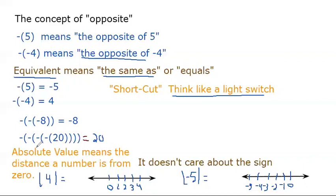Another important vocabulary term is absolute value. Absolute value means the distance a number is from zero. These vertical bars are absolute value symbols. They ask how far is four from zero? Here is zero and here's four — if you count, four is one, two, three, four units from zero. So the absolute value of four is simply four.